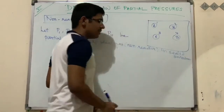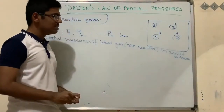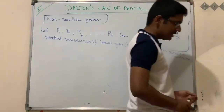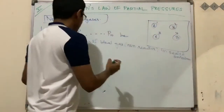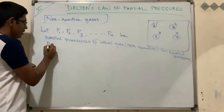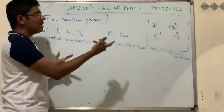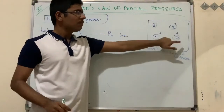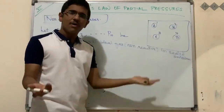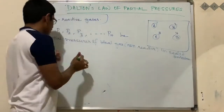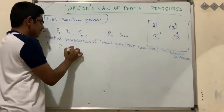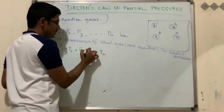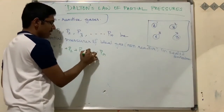According to Dalton's law, what he experimented and proved is that the total pressure is the sum of the individual pressures. So the pressure exerted by gas 1, gas 2, gas 3, gas 4 — if you add them, you get the total pressure: P_total = p1 + p2 + p3 + ... + pn.